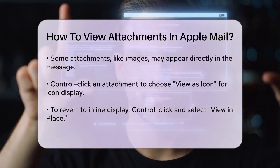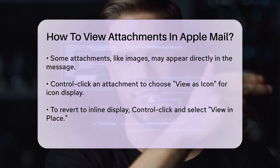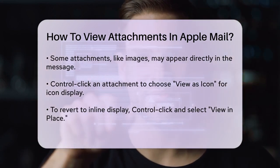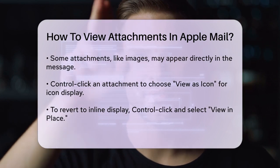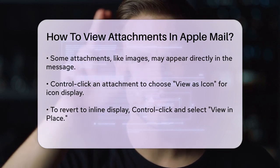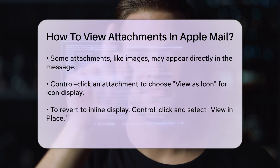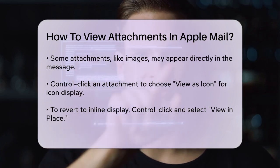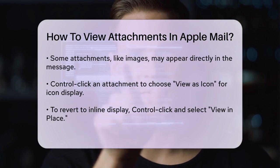Some attachments, like images or one-page PDFs, are displayed directly in the message. If you'd rather see these as icons instead of inline images, control-click the attachment and choose View as Icon from the shortcut menu. To display the attachment again in the message, control-click it and choose View in Place.